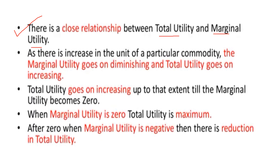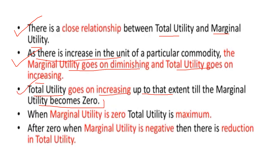As we increase the units of a particular commodity, marginal utility goes on diminishing and total utility goes on increasing. As we keep consuming more units, the utility decreases, but total utility increases until marginal utility becomes zero. When marginal utility is zero, total utility is at its maximum. After that, when marginal utility becomes negative, there is a reduction in total utility.